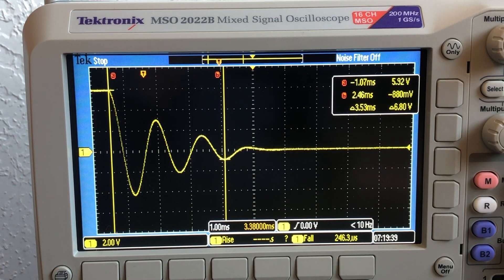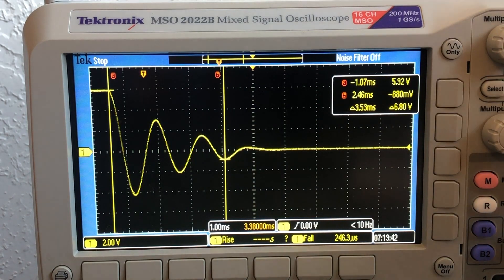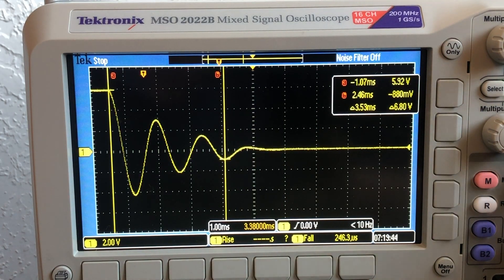The next peak is minus 880 millivolts or 0.88 volts and that is at 3.53 milliseconds.